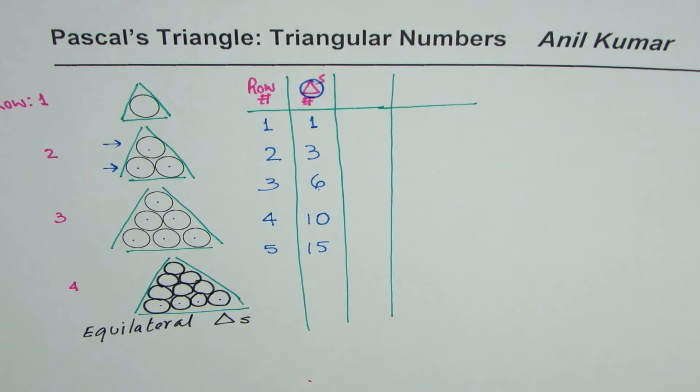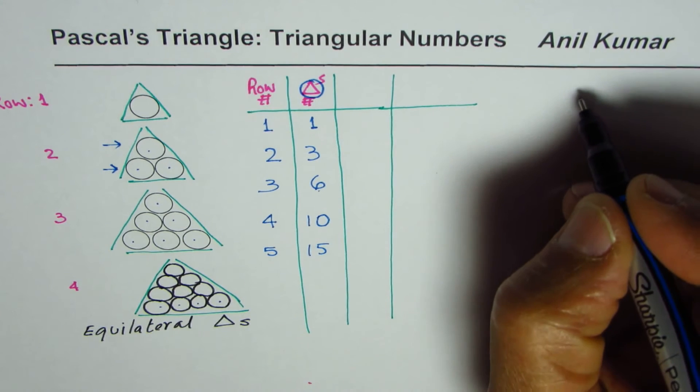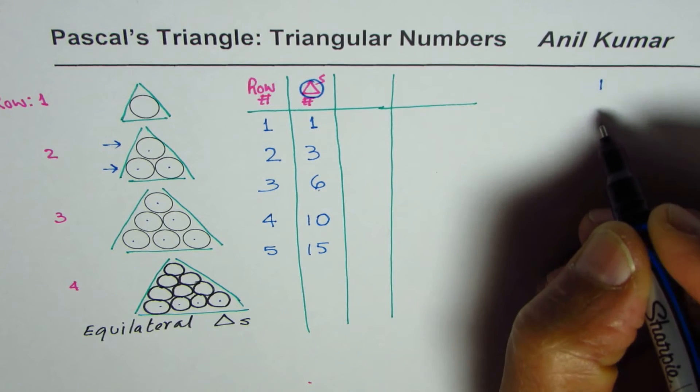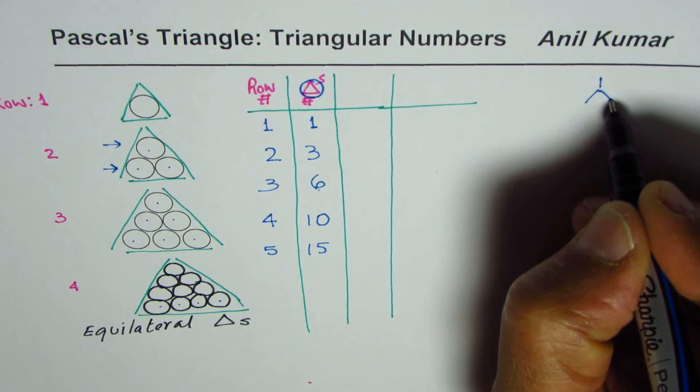Now, is there a relation of this pattern with Pascal's triangle? That is the main idea. So let us see if there is one. So let us start with row zero for Pascal's triangle.